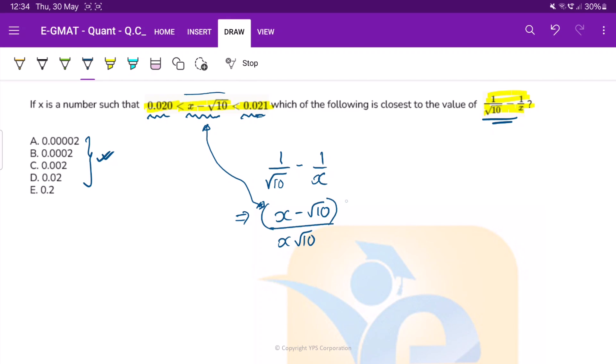So what do we have? That this number is between these two numbers. Alright, so this can be what? Say, for example, 0.0201 something like that. So this is greater than 0.020 and less than 0.021. Alright, something on these lines.